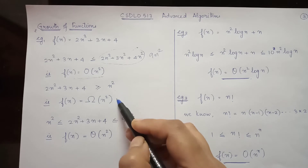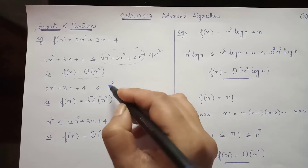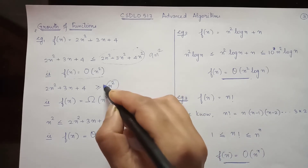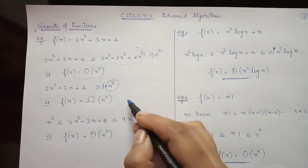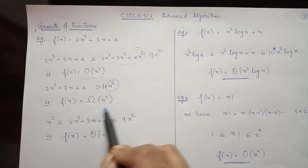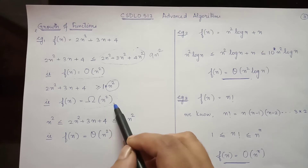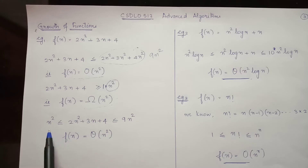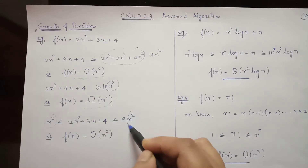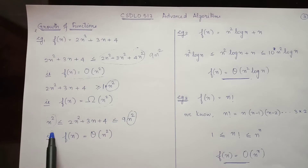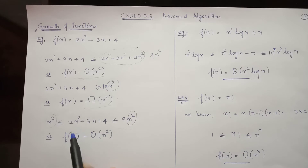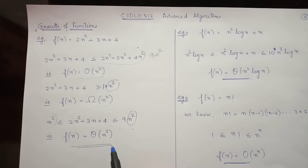Now consider the lower bound of this function. For the lower bound we have considered just n² — that is 1 times n², which is nothing but n². So here f(n) can be represented as Omega of n². Combining this together, we can see that with the same time function n² we can represent the lower bound as well as the upper bound, so f(n) can be represented as Theta of n².